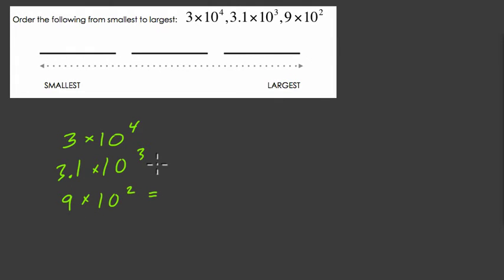And if we write these in standard form, what do we get? We get 30,000, right? The decimal place moves over 4 times. Because we multiply 3 by 10 four times, that's 30,000.